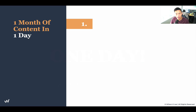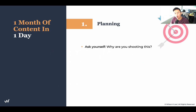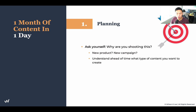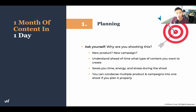Step number one is planning. Plan exactly why you're shooting this whole campaign. Are you shooting the campaign for a new product? Are you shooting for a fall promotion? Whatever it is, understand clearly why you're shooting these promotions and what you want for this whole shoot. Understand ahead of time the type of content you want to create, because it's going to save you time, energy, and stress during the shoot. If you're able to plan accordingly, you can condense multiple different products and campaigns into one shoot, but only if you're able to plan it properly.